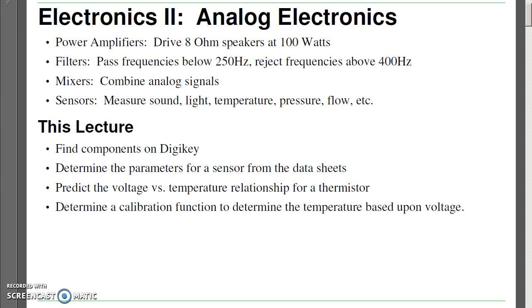In this lecture, we're going to cover some things we look at in Electronics, namely finding components in Digi-Key, a very nice website out of Thief River Falls, how to determine the parameters for a sensor based from these data sheets, come up with a mathematical model to relate voltage versus temperature for a thermistor, and then come up with a calibration function using MATLAB, so that given the voltage out of a circuit, I can tell you what the temperature is.